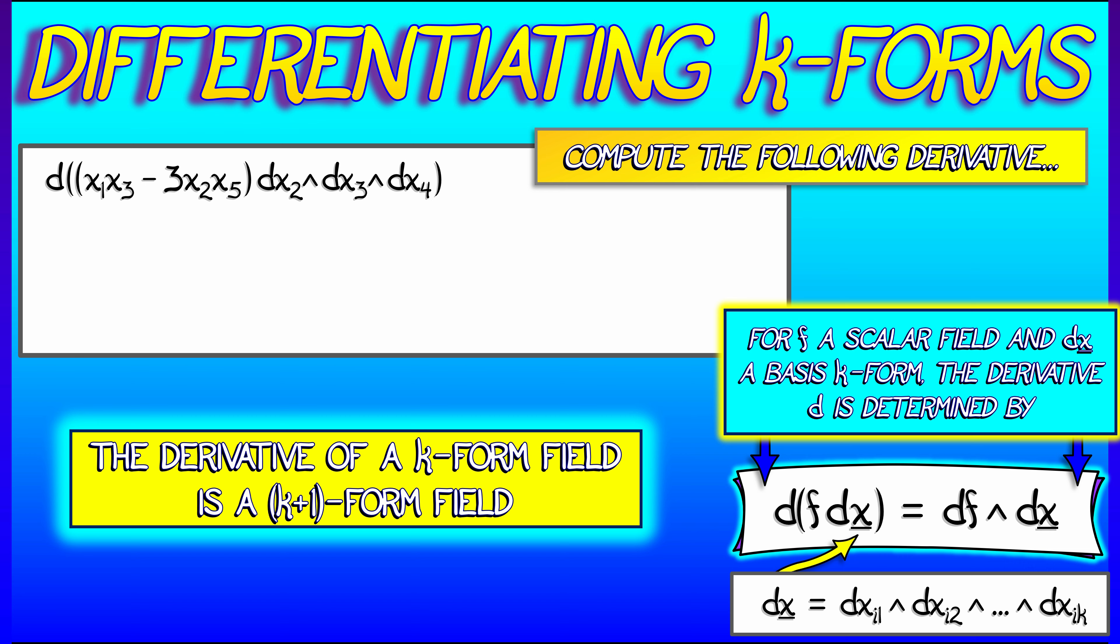Now, what do we need to do? What we need to do is take the derivative of x1x3 minus 3x2x5, and then wedge that with the three-form dx2 wedge dx3 wedge dx4.